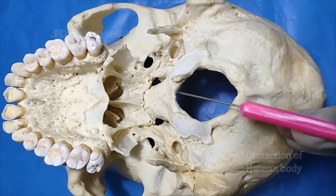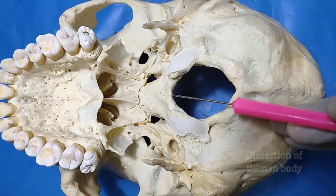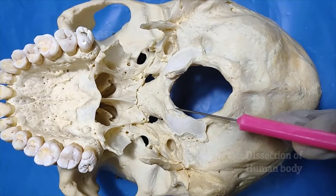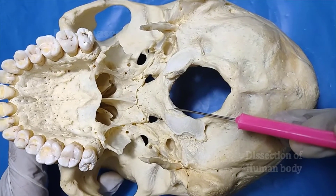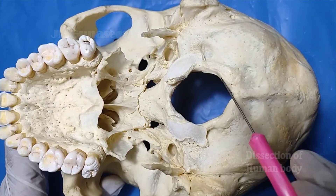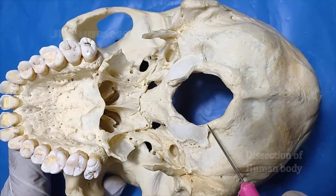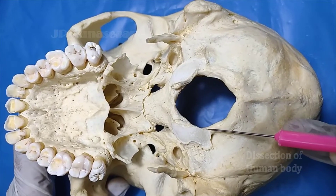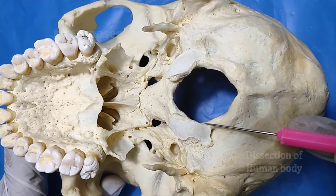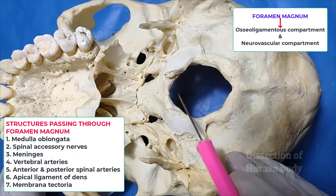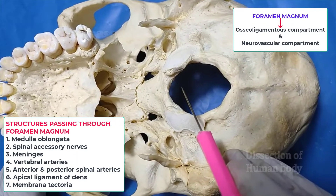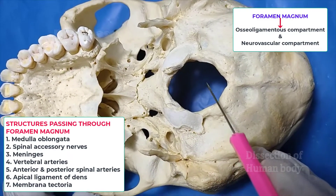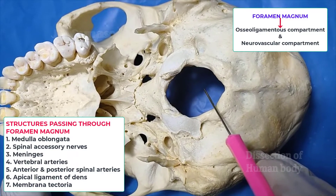In the anterior margin of foramen magnum, the center point is called the basion. The anterior margin gives attachment to the anterior atlanto-occipital membrane, and the posterior margin gives attachment to the posterior atlanto-occipital membrane. The lateral border gives attachment to the alar ligament of the dens. The anterior compartment is called the osseo-ligamentous compartment because it mainly contains the odontoid process with its associated ligaments. The posterior compartment is called the neurovascular compartment.